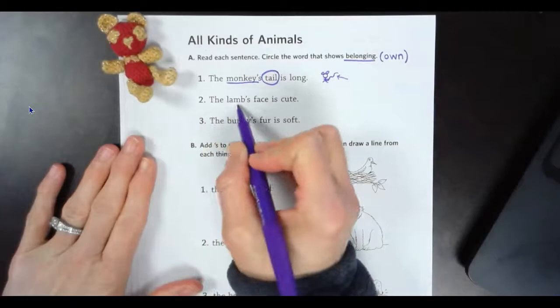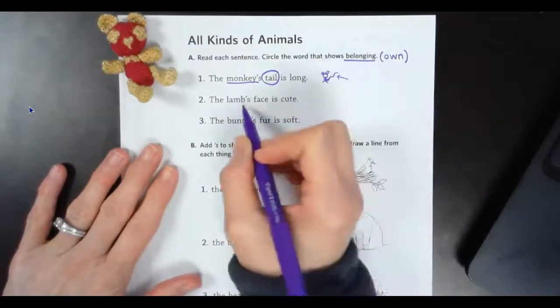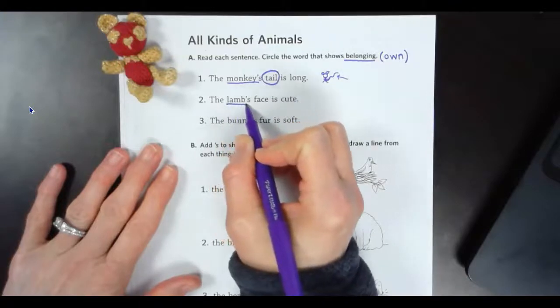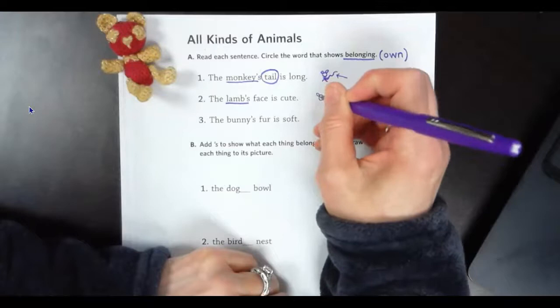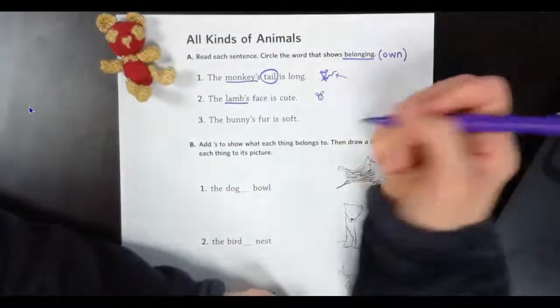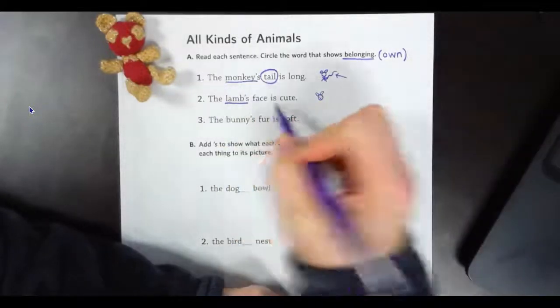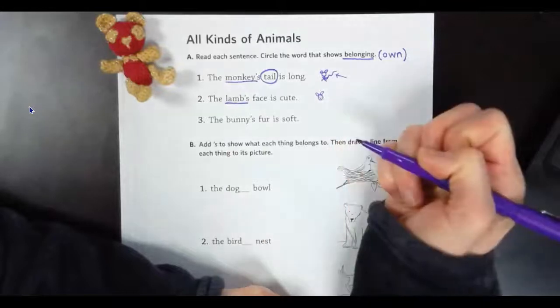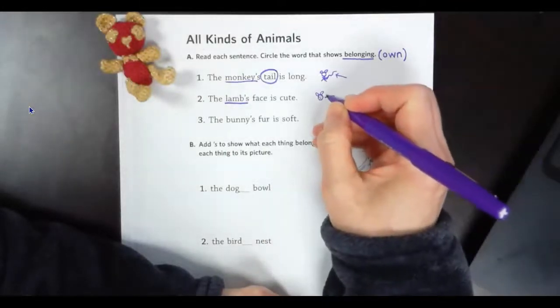All right. The second one says, the lamb's face is cute. All right. So our animal is the lamb. So we've got our little lamb over here. And you'll know I don't draw animals. So this is just my lamb. My lamb face. It doesn't look like a lamb, but that's okay. And what belongs to the lamb? What belongs to the lamb? Yep. You're right. Its face. Its cute little face.